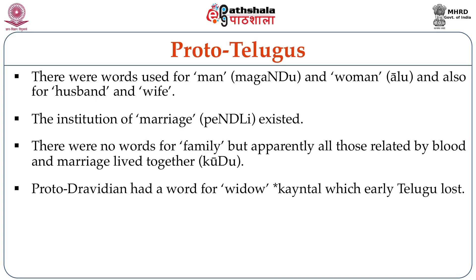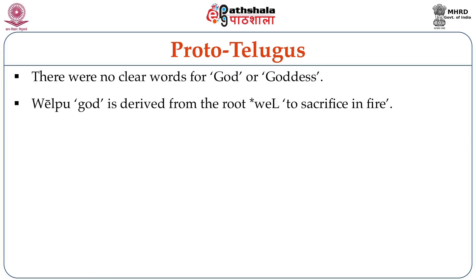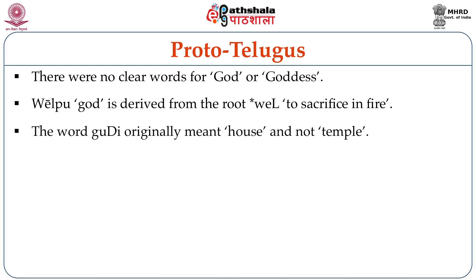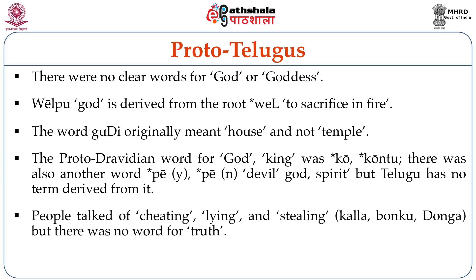Proto-Telugu had a word for widow, kayintal, which early Telugu lost. There were no clear words for god or goddess. Velpu (god) is derived from the root vel, meaning 'to sacrifice in fire.' The word gudi originally meant house and not temple. The proto-Dravidian word for god or king was ko or konto. There was also another word pe or pen meaning devil, god, or spirit, but Telugu has no term derived from it. People talked of cheating, lying, and stealing (kalla, bonko, donga), but there was no word for truth.